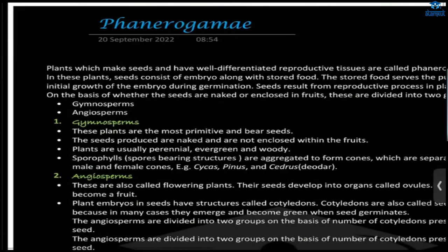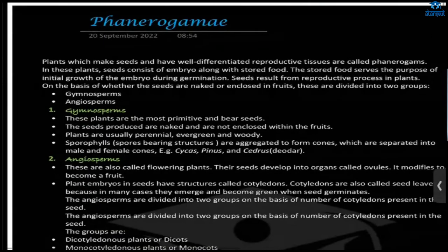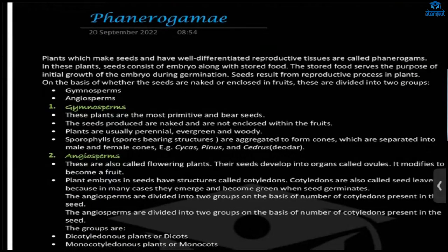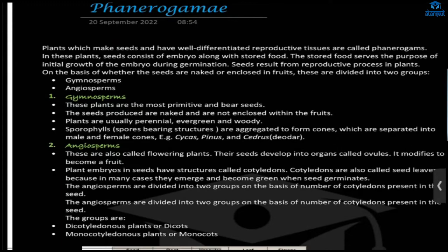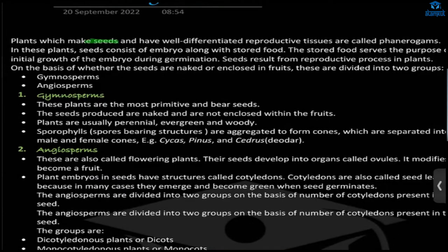Next we have phanerogams. Phanerogams have seeds and their reproductive organs are well differentiated. They also contain seeds. Based on the seed, if the seeds are naked — meaning they don't have any covering — then they are called gymnosperms.